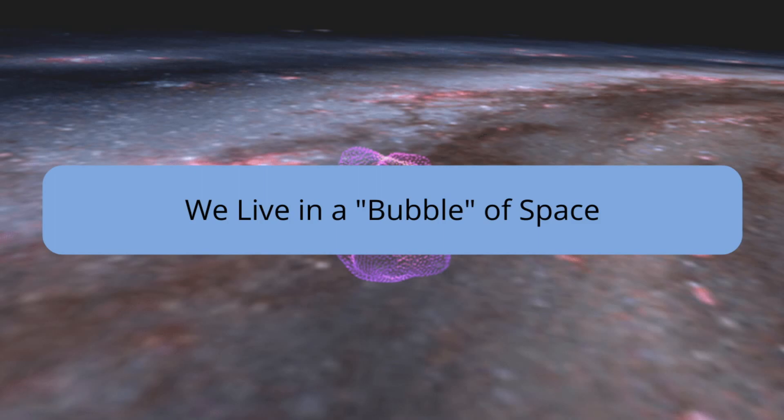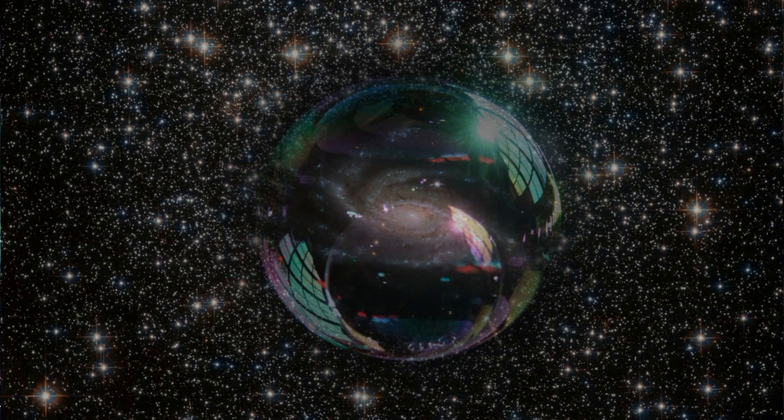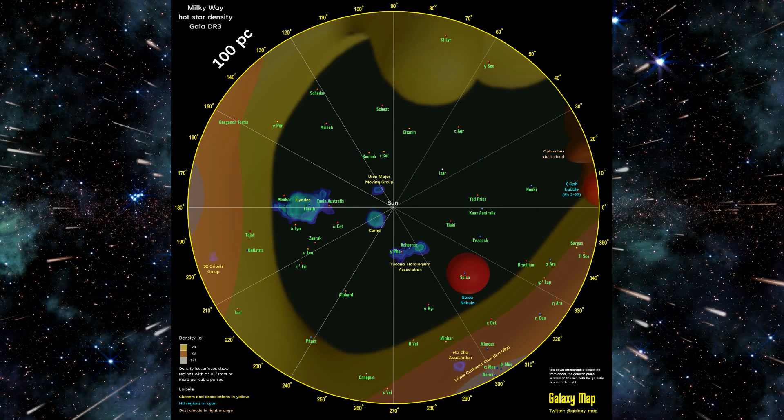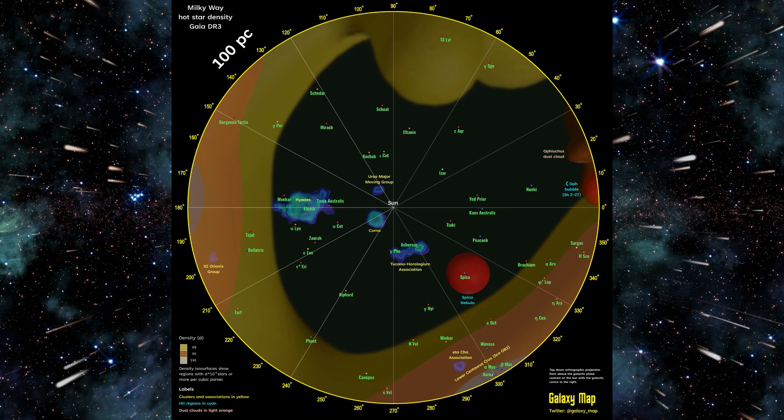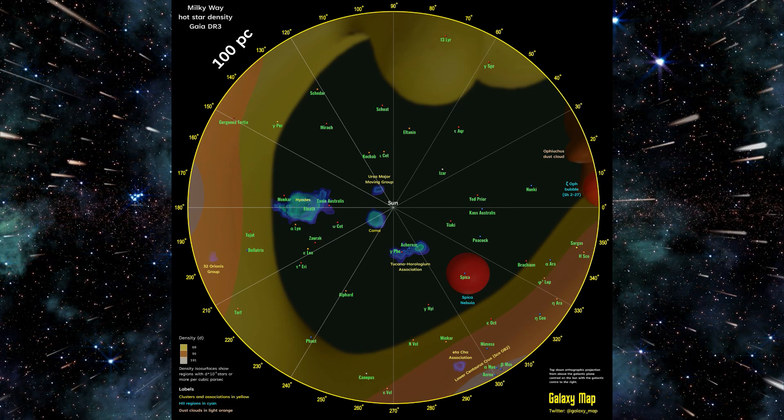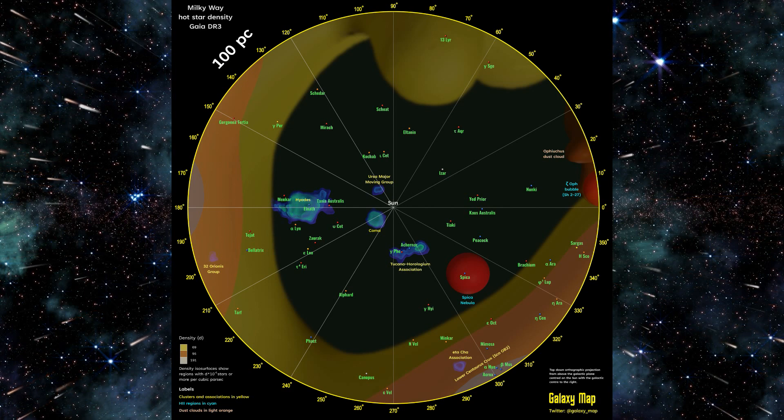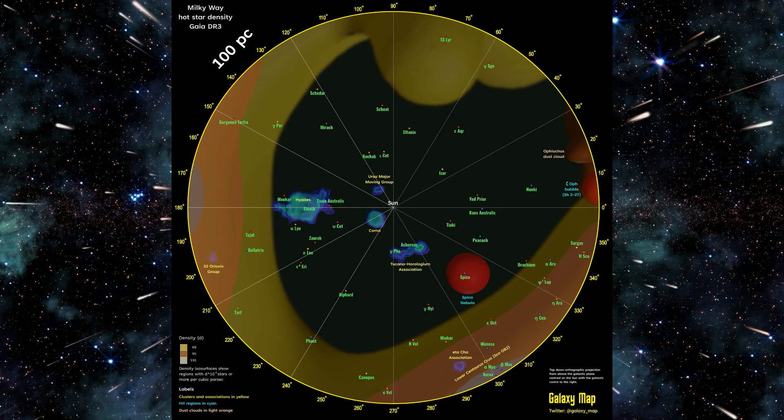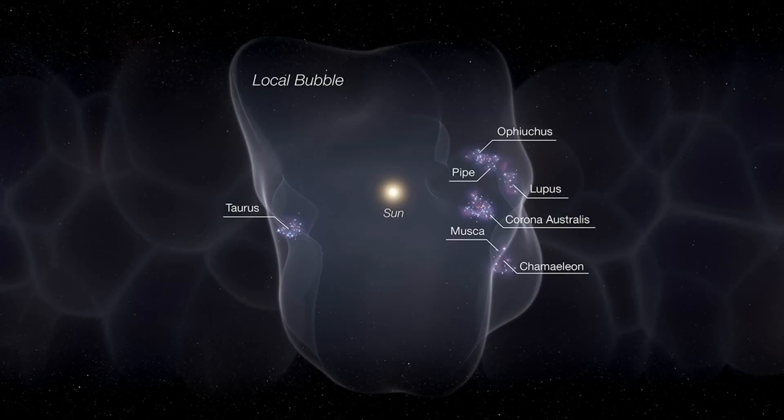We live in a bubble of space. Imagine Earth nestled within a giant invisible bubble in space. That's not science fiction; it's our reality. We live in a region called the Local Bubble, a fascinating feature shaped by the explosive history of our galactic neighborhood. The Local Bubble is a vast cavity of hot, low density gas that spans roughly 1000 light years in diameter. It's a region with a lower density of gas compared to the surrounding interstellar medium, the space between stars filled with gas and dust.